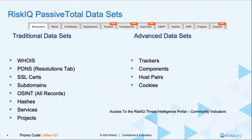Talking through some of the data sets: we have two different types. We've got our traditional data sets — your WHOIS, PDNS — all of the resolution history that we've captured over the last 11 years, our certificate subdomains, OSINT (open source intelligence), as well as hashes, services, and projects. We'll talk more about what all of those are in the coming slides.